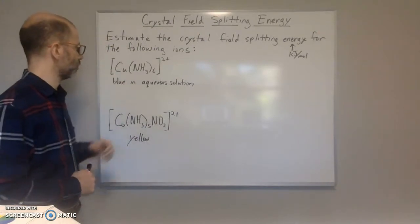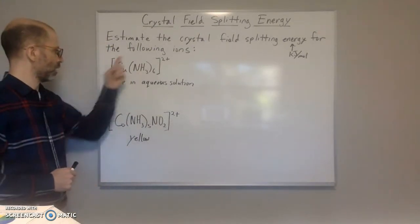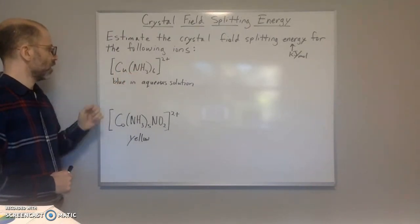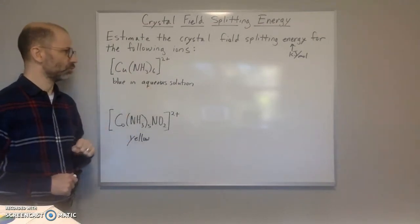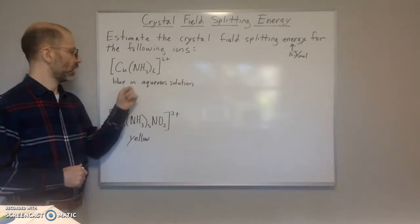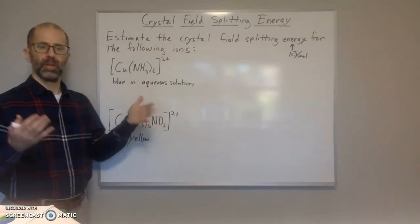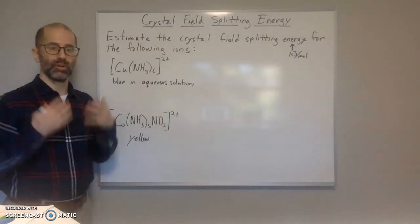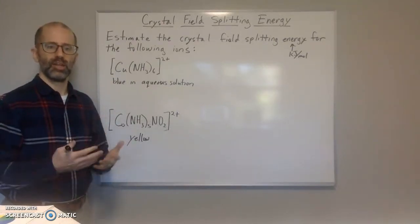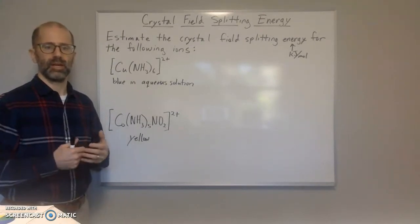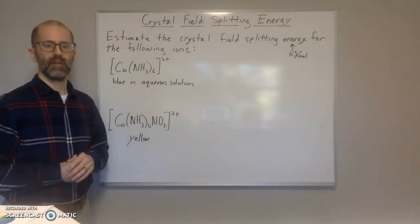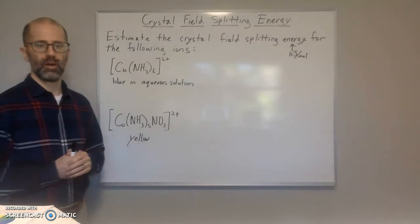So I have two examples. The first one is this example right here. This ion we're told is blue in aqueous solution. So the first thing we're going to do is figure out what light is absorbed. So we know it is blue, so that must be the light that is being reflected for us to see the blue color. So that means the opposite light must be absorbed.